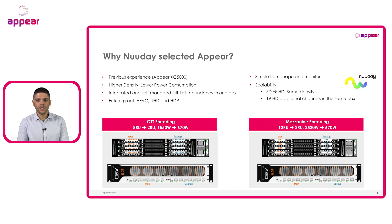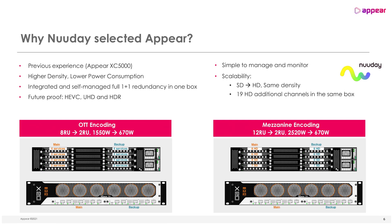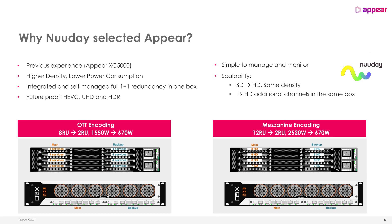Now let's have a look at why APIR solved their challenges and was therefore the immediate choice for New Day, starting with the fantastic previous experience that New Day had with APIR's XE 5000 platform. A key reason to choose APIR was definitely the higher density and lower power consumption. Looking at the images in this slide, we can see that the savings in rack space and power consumption were remarkable for both cases — OTT and mezzanine — meaning that choosing APIR was choosing a greener footprint.